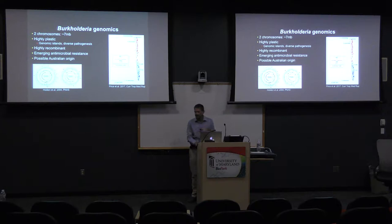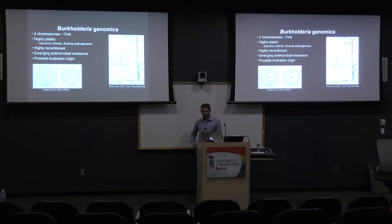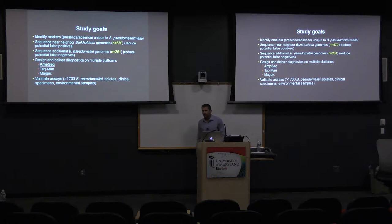From a genomics perspective, B. pseudomallei has two chromosomes totaling about seven megabases — a fairly large bacterial genome. It's highly plastic, characterized by genomic islands, with a complex pathogenesis involving no single causative gene. It's highly recombinant, which complicates timing analyses. It has emerging antimicrobial resistance, which is a big problem when treating with first-line drugs. Phylogenetically, the red genomes from Australia suggest it probably has an Australian origin. Our goal was to identify markers specific to Burkholderia pseudomallei and mallei.